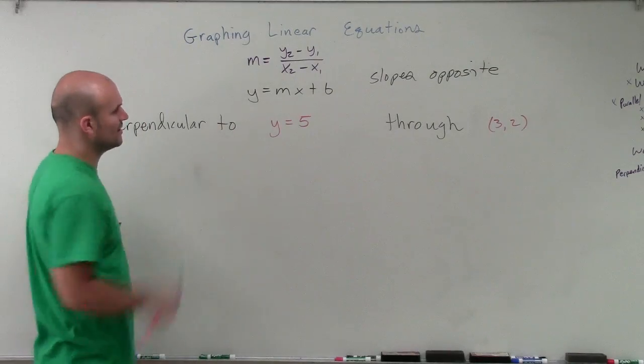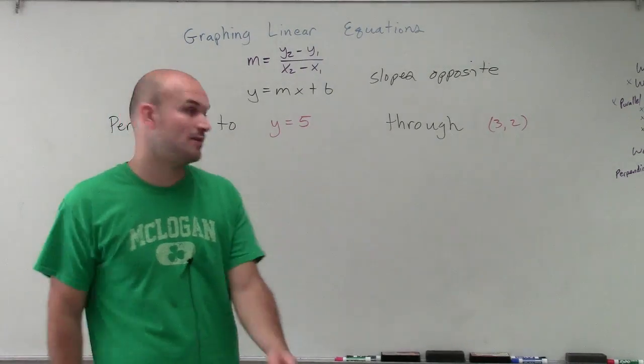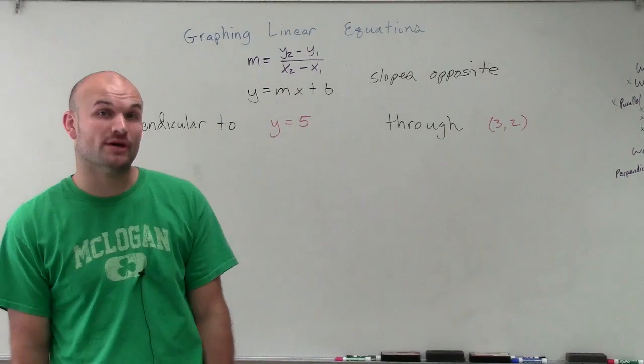Welcome. So what we have here is I want to graph a line that's perpendicular to the line y equals 5 and that goes through the point 3 comma 2.